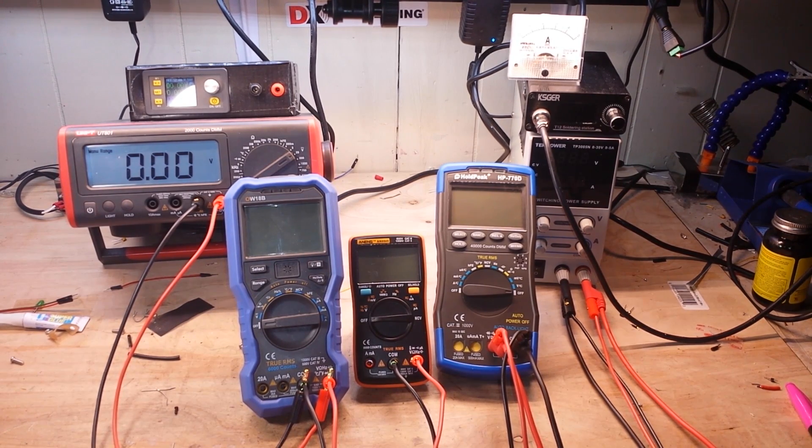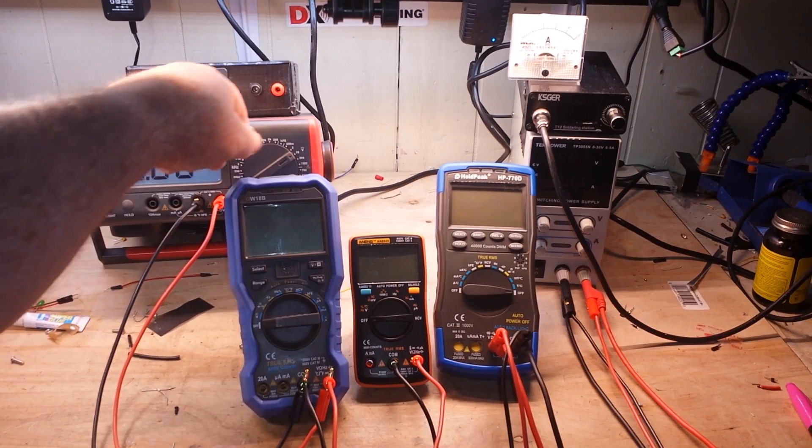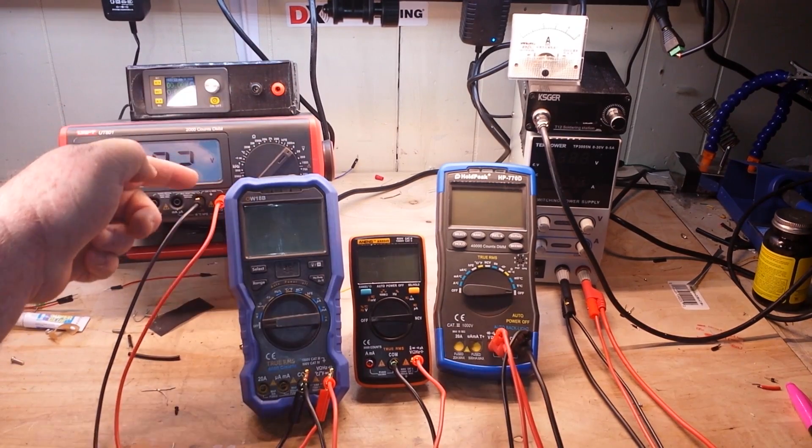Really simply, instruments that have display counts specified are usually multimeters. And what they do is they have different ranges that they can read. Like for instance, this is a manual ranging meter, I actually have to set the range.